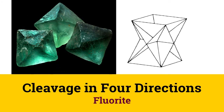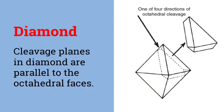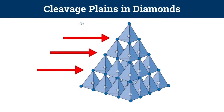Fluorite and diamond have cleavage in four directions, and these directions are parallel to the faces of an octahedron. Sphalerite is a common ore of zinc. Its cleavage planes are parallel to faces of a rhombohedron, and in this crystal form there are six pairs of two parallel faces. Therefore, this mineral has cleavage in six directions. Diamond is the hardest known mineral, and so it is only possible to cut along its cleavage planes, which are parallel to octahedral faces. This image shows the large-scale diamond structure with multiple carbon tetrahedra. The cleavage planes here are parallel to a face, as shown by the arrows.